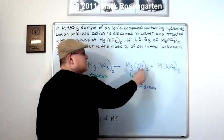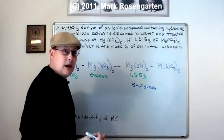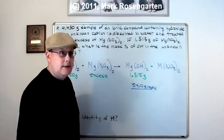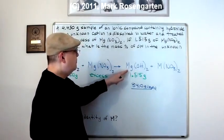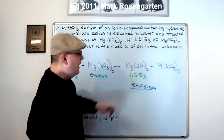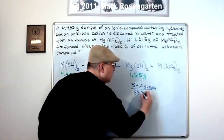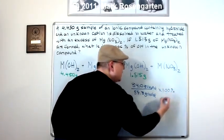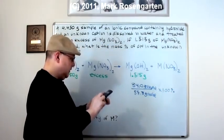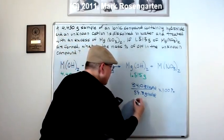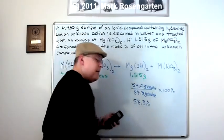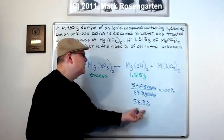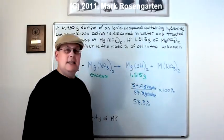So hydroxide weighs 16.0 plus 1.0, that's 17, times 2. 17 times 2 is 34.0 grams per mole. That's the mass of hydroxide per mole of magnesium hydroxide divided by, well, magnesium weighs 24.3. So 24.3 plus 34.0 gives us a total formula mass of 58.3 grams per mole, which will cancel, and we multiply by 100 to get the final answer. And that gives us 58.3% by mass.